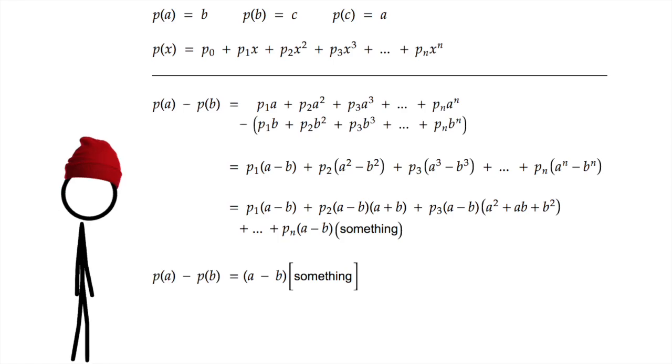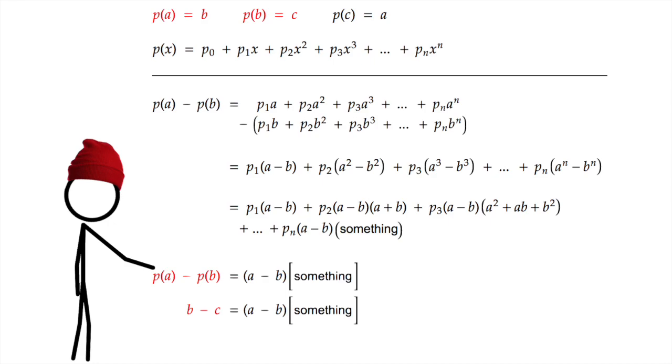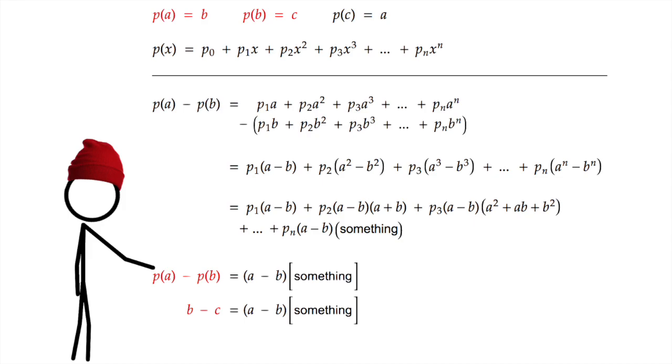And remember, this is just p of a minus p of b. But don't forget our assumption. p of a equals b and p of b equals c. So this is also b minus c, which means b minus c is a multiple of a minus b. Or in other words, b minus c divided by a minus b is an integer.